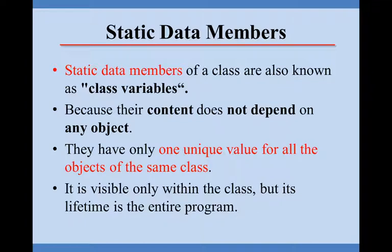Whenever we are declaring any class and any data member in it, its value depends upon the object. That means for a class if we are declaring object 1, object 2, object 3, in every object the variable value will be different. But whenever we declare it as static, the value does not depend on any object. It is fixed for all the objects.